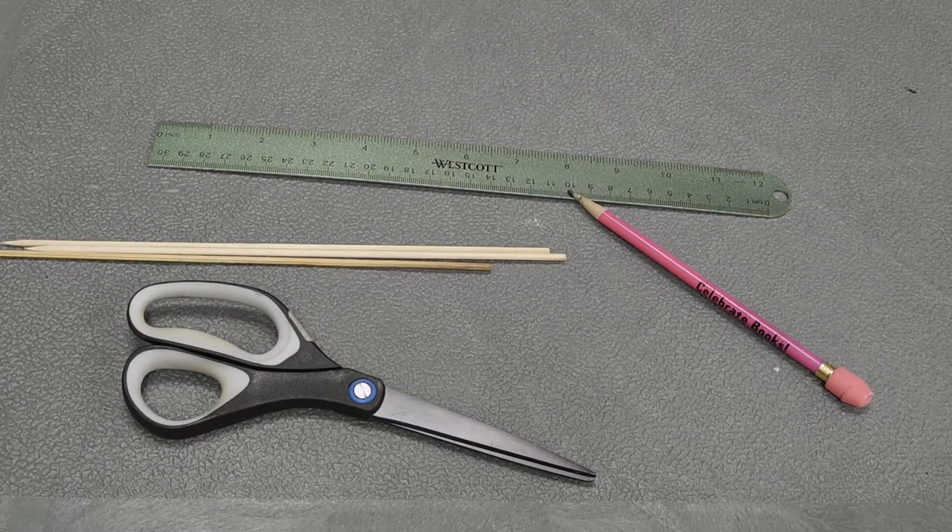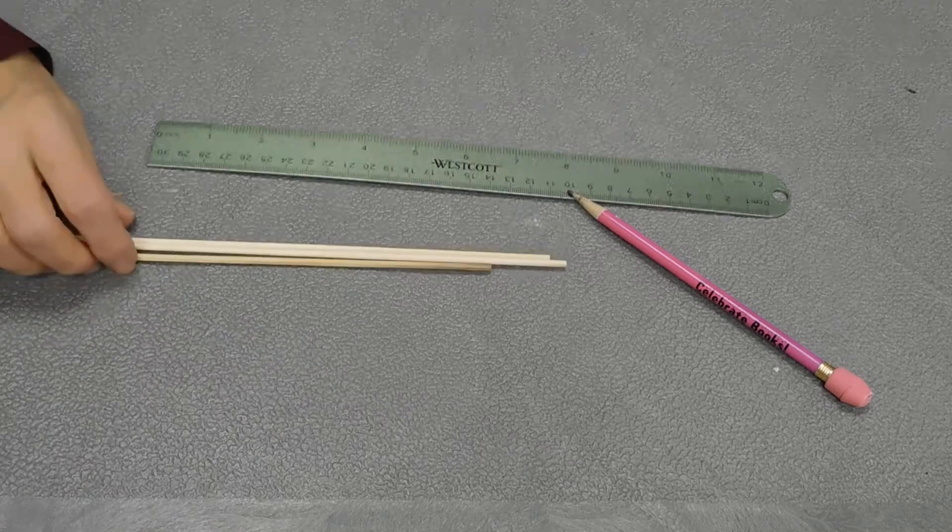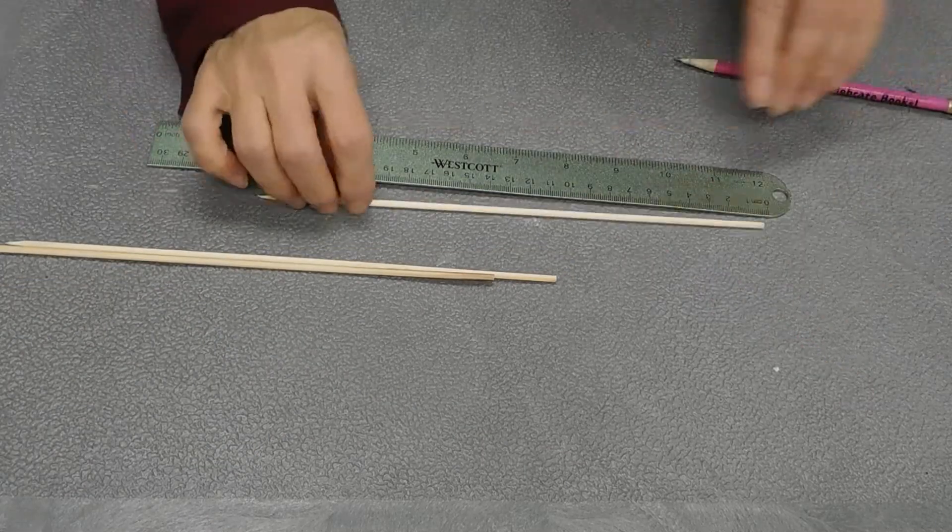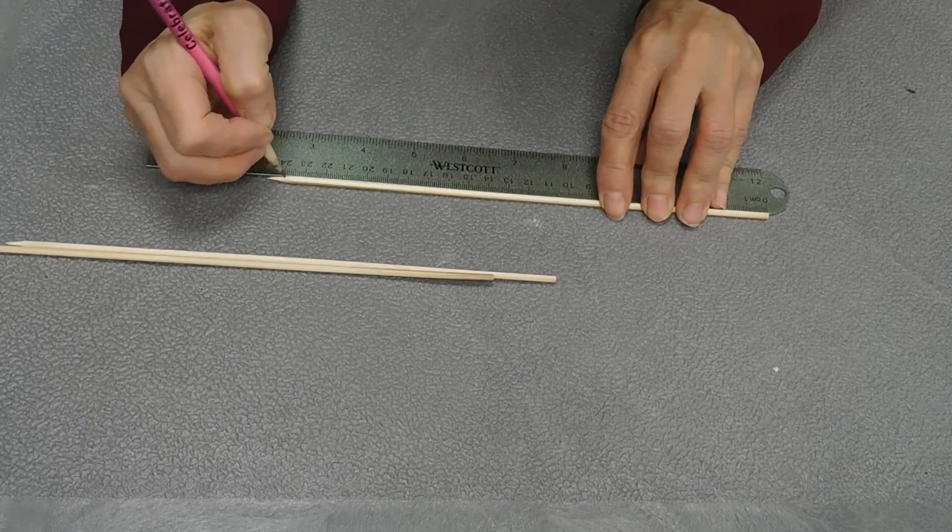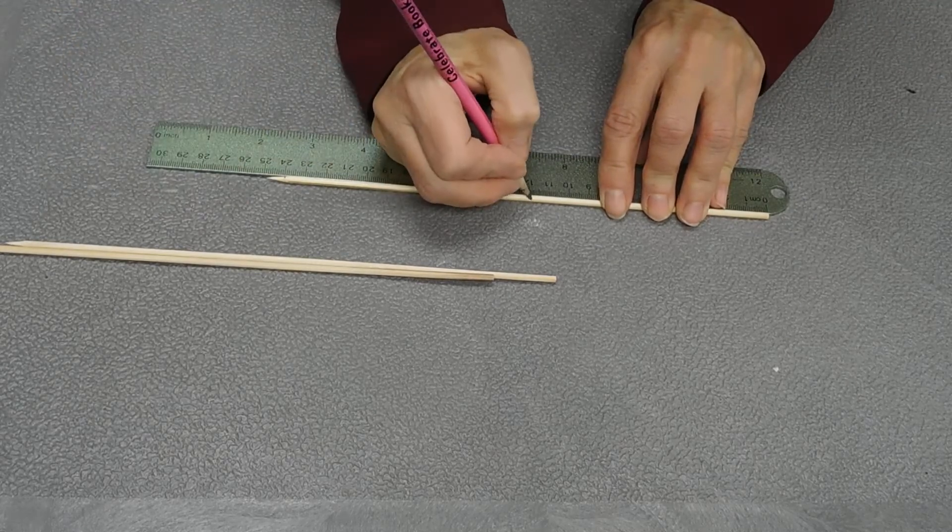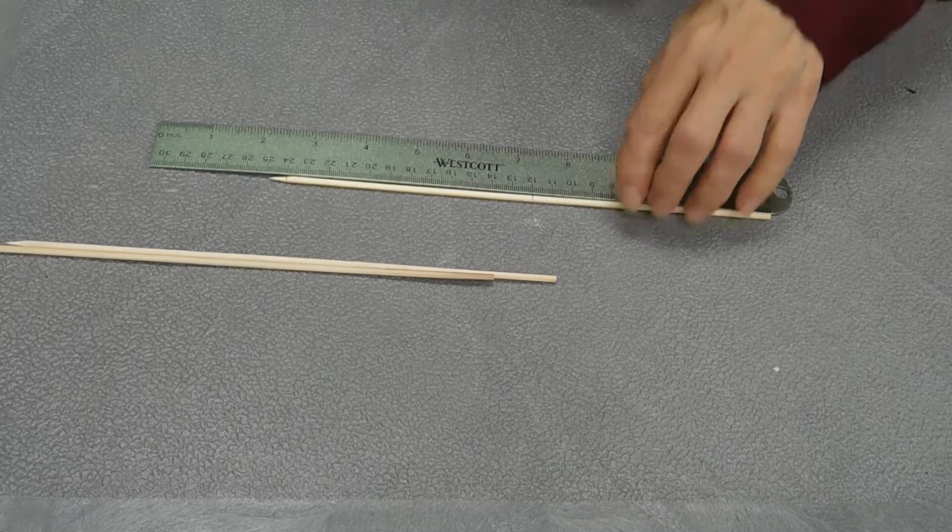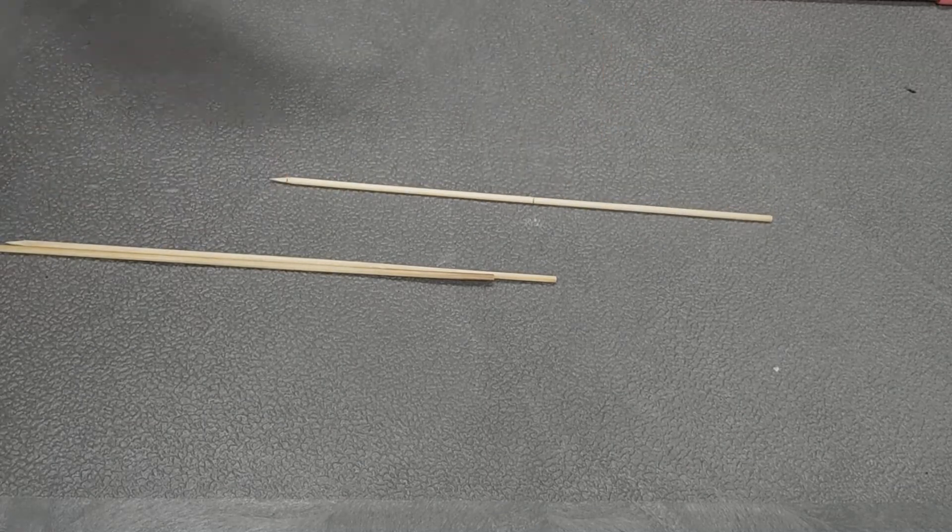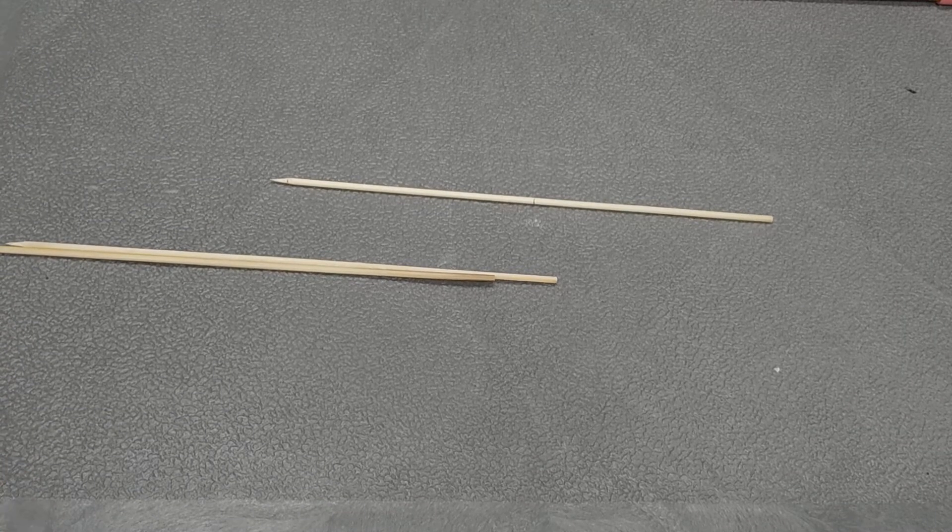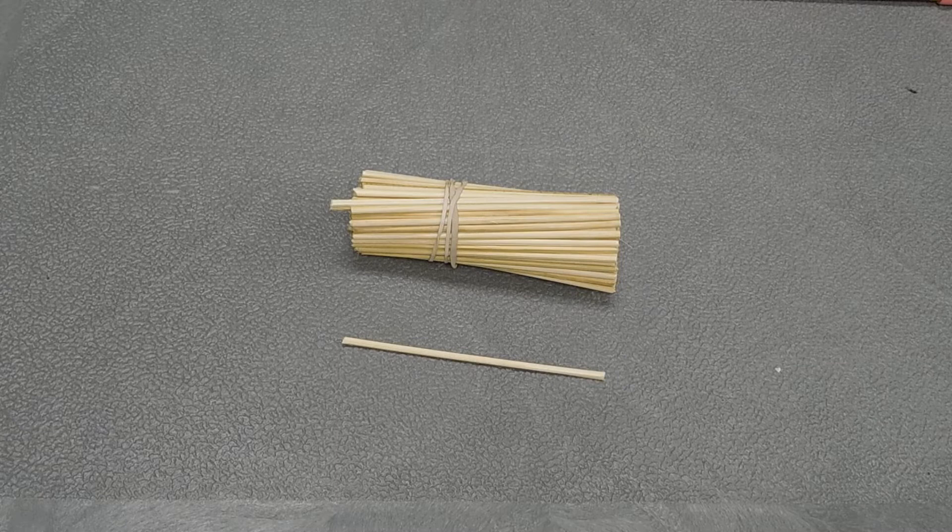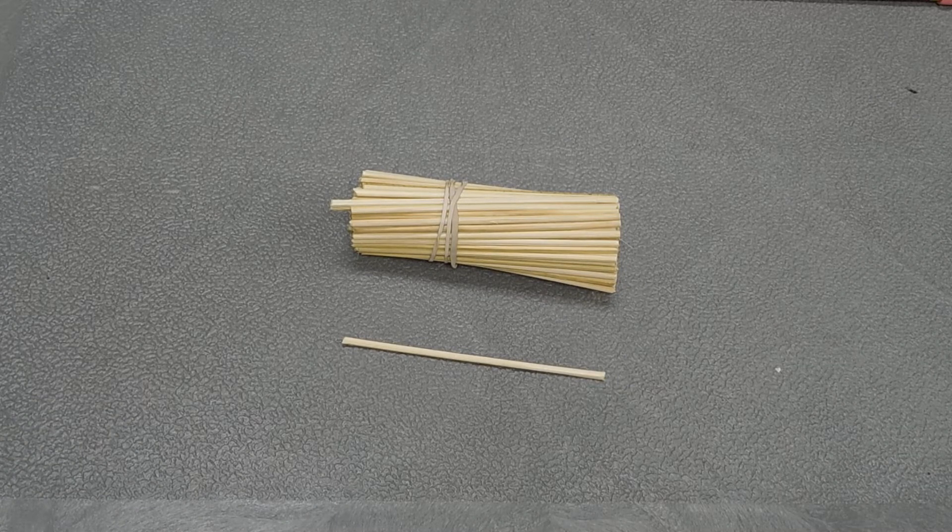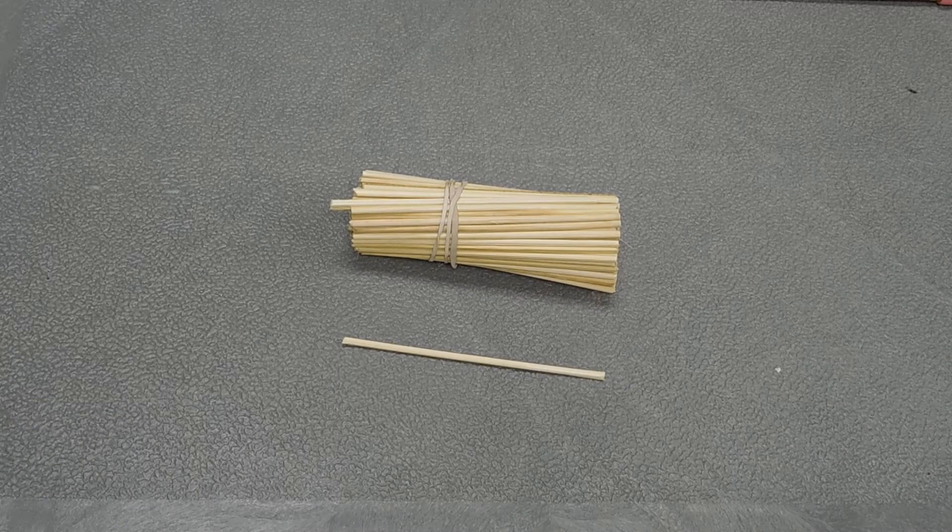So the first thing I did was I measured my bamboo skewers to 24 centimeters and then I also measured at 12 centimeters. I cut them on both of those lines so that I have skewers that are 12 centimeters long. What we're going to do now is make the base of our pyramid.